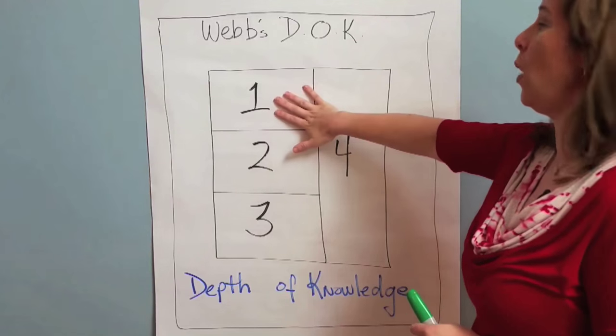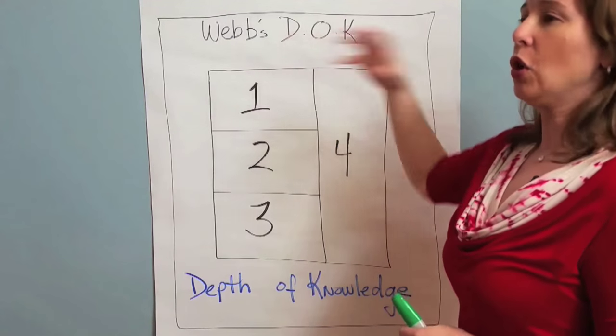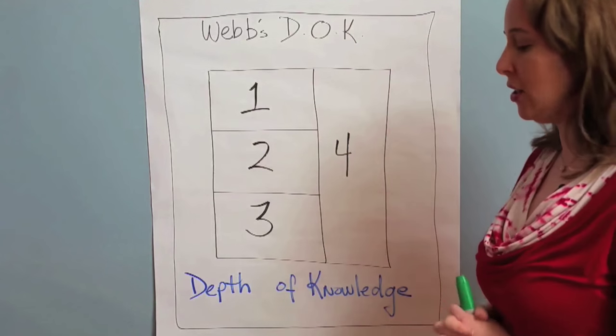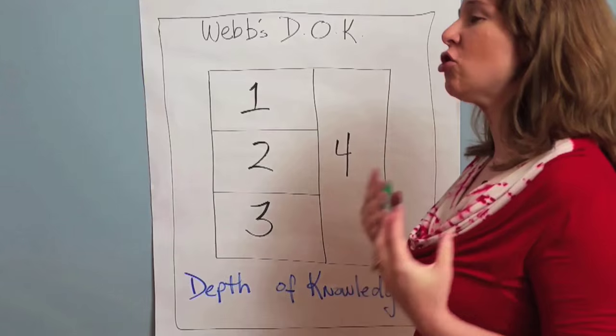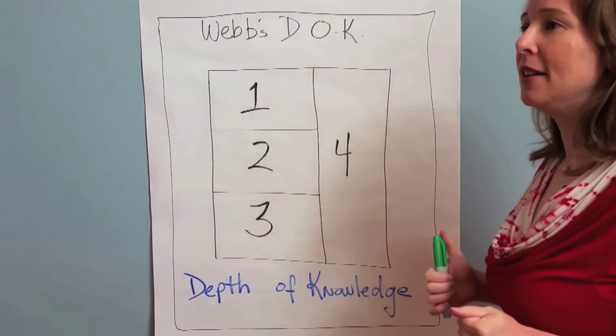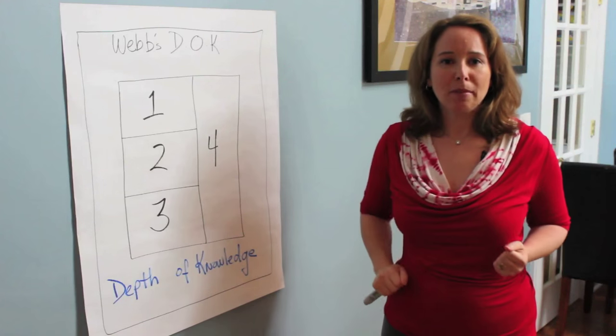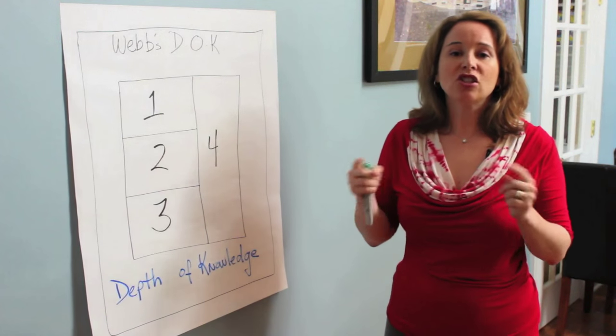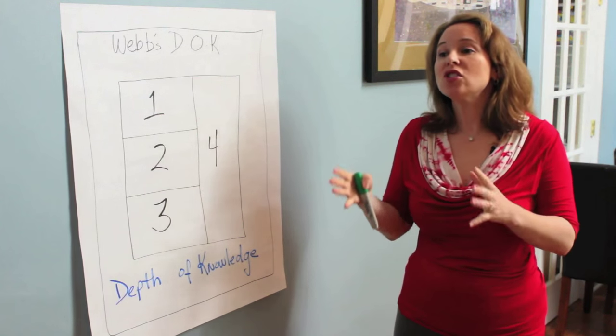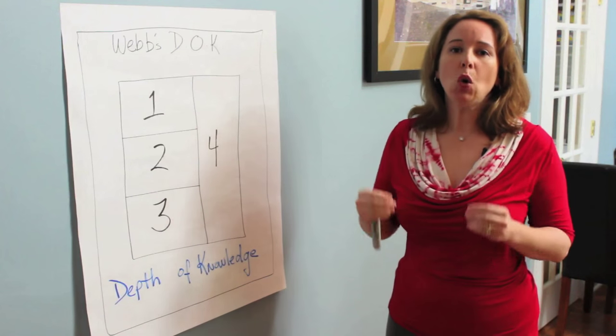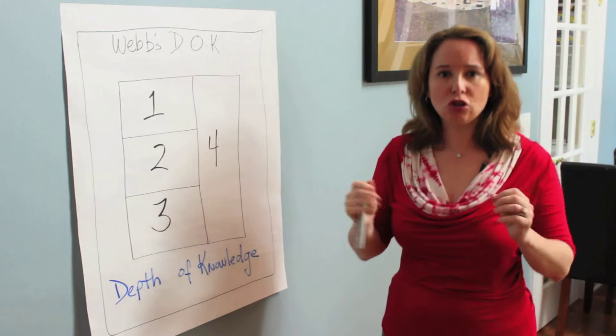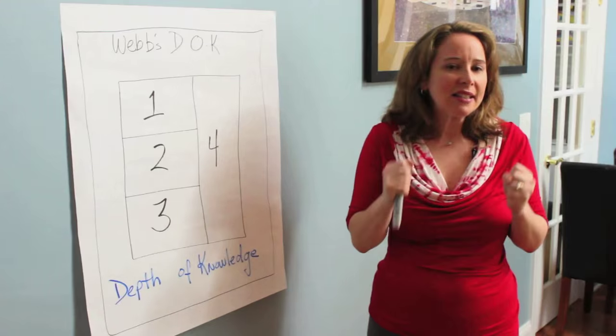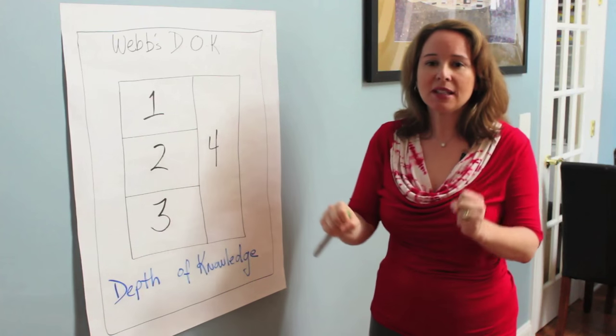So if I start off in DOK 1, DOK 1 questions about a chocolate chip cookie unit might be things that describe the concept cookie. So what's a chip? Describe how a chocolate chip cookie tastes. So what does a chocolate chip cookie taste like? What does a chocolate chip cookie look like? How would I distinguish between chips and cookies?